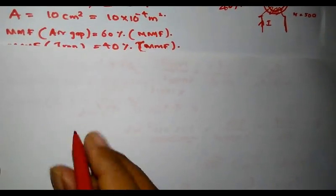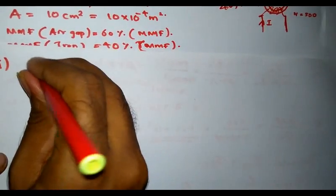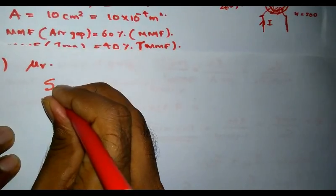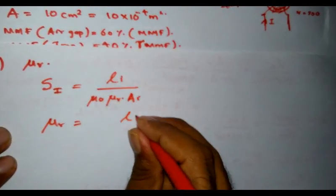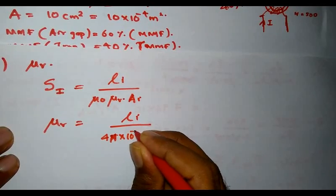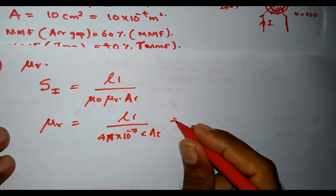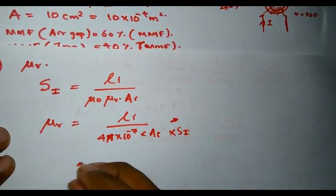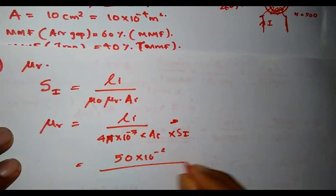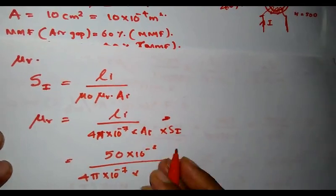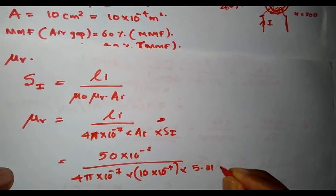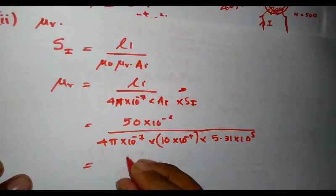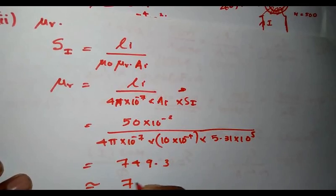For the third part, we determine the μr of the iron. From the equation: S_iron = Li / (μ₀ × μr × A), we can rearrange to find μr = Li / (μ₀ × A × S_iron) = (50×10⁻²) / (4π×10⁻⁷ × 10×10⁻⁴ × 5.31×10⁵). Solving this gives μr = 749.3, approximately equal to 749.